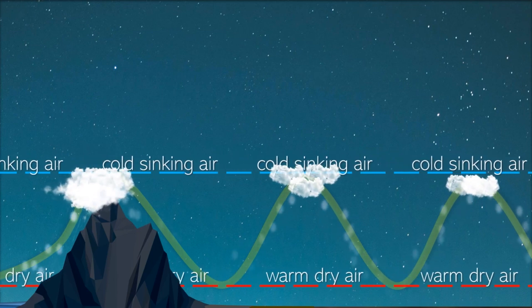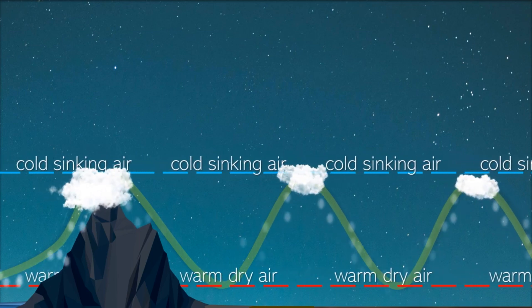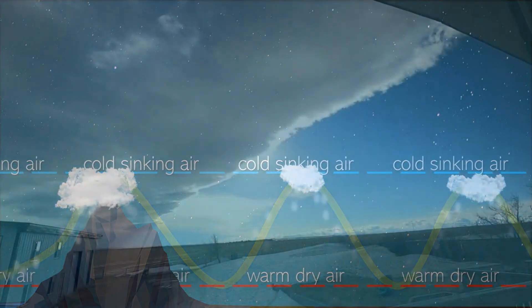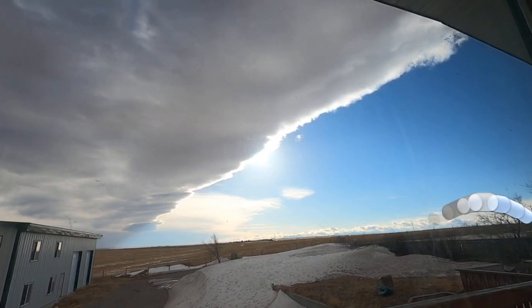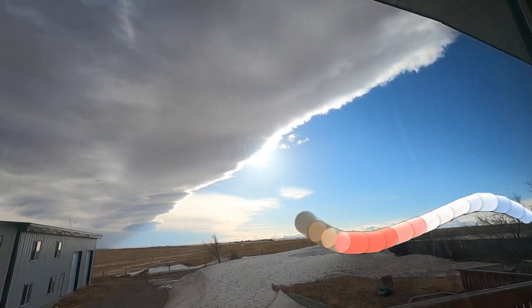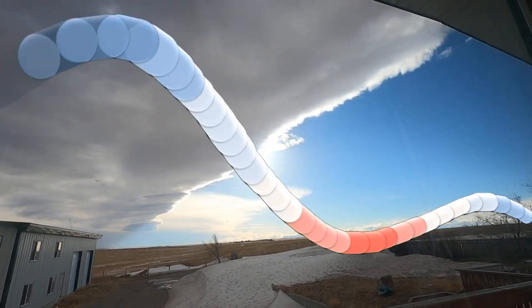You'll also notice them becoming weaker as they develop away from the mountain. You can see this pattern in time-lapse videos of Chinook arches. Here is where the wind goes up, forming clouds, here is where it goes down, dissipating them, and here is where they go up again.